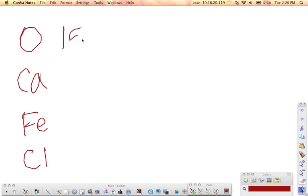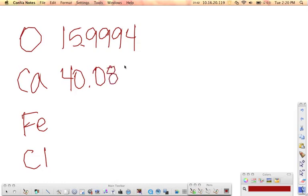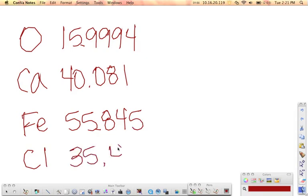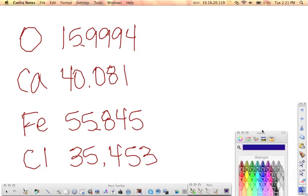So oxygen on the periodic table is 15.9994 - units on this would either be AMUs if we're talking about an individual atom or grams per mole if we're talking about a mole of oxygen atoms. Calcium on the periodic table is 40.081 grams per mole. Iron is 55.845, and chlorine is 35.453.